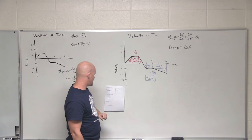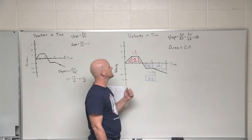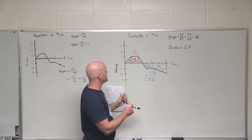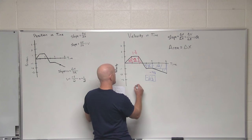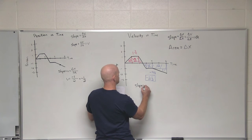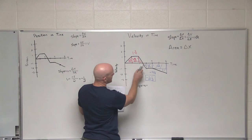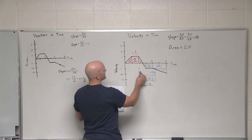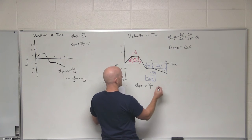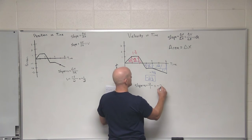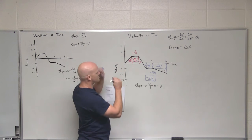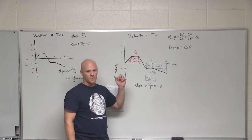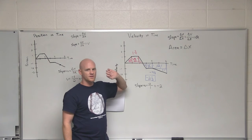The last question asks for the acceleration from t equals two seconds to three seconds. Acceleration is just the slope there. Rise over run: we go down two, so rise is negative two, and the run is one second. That gives an acceleration of negative two in whatever units this graph uses.